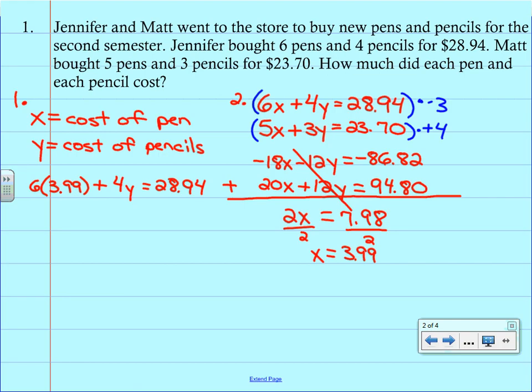We're going to start by simplifying. So 6 times 3.99 is 23.94. Everything else is going to come down. And then you're just going through your solving. So if you subtract 23.94 from each side, you end up with 4Y equals 5. And then dividing both sides by 4, we get Y equals 1.25.